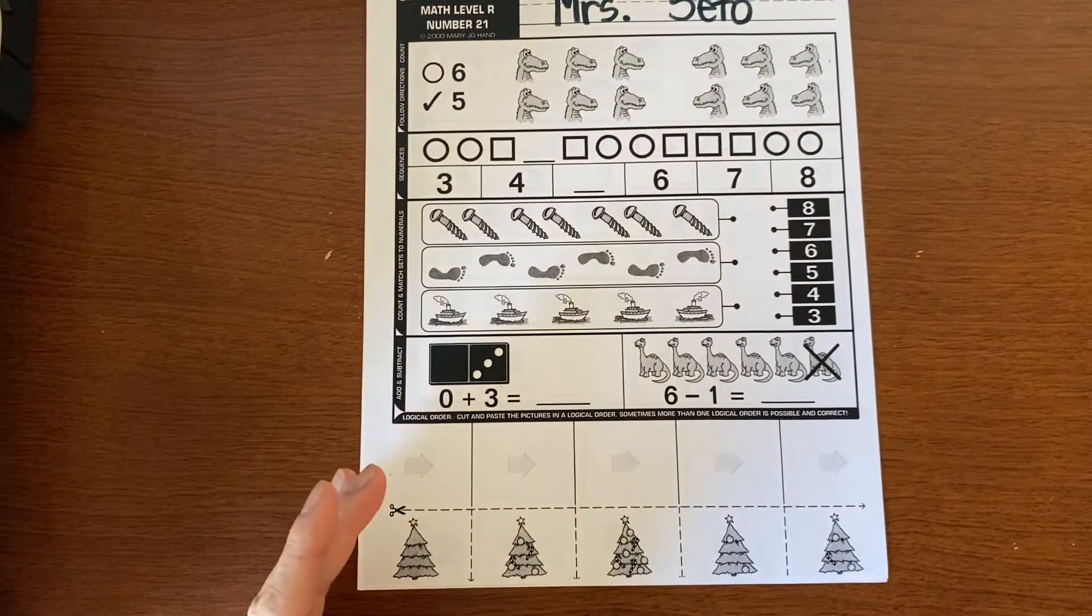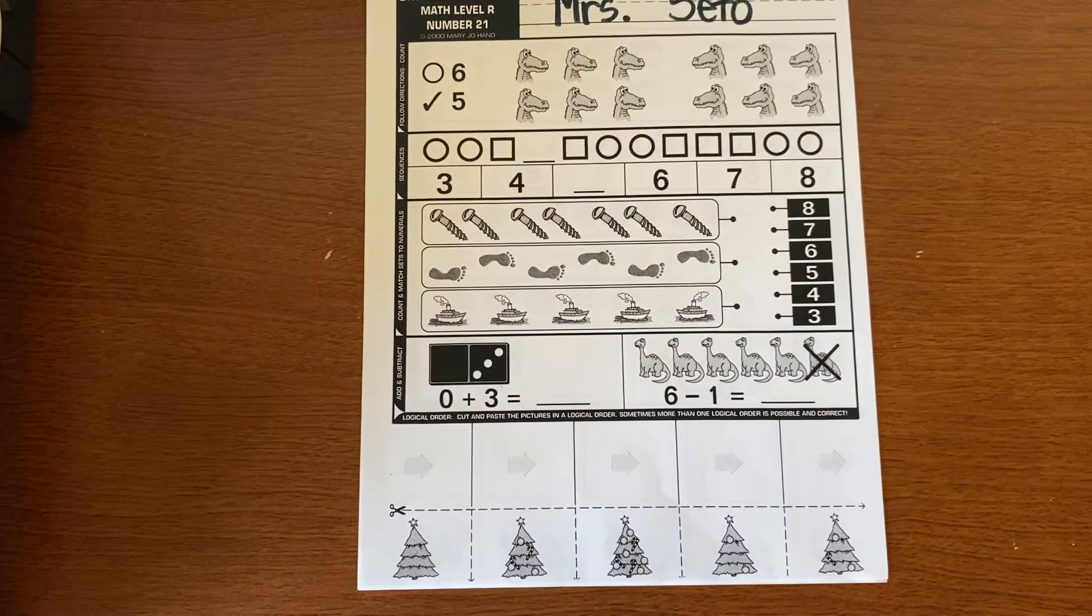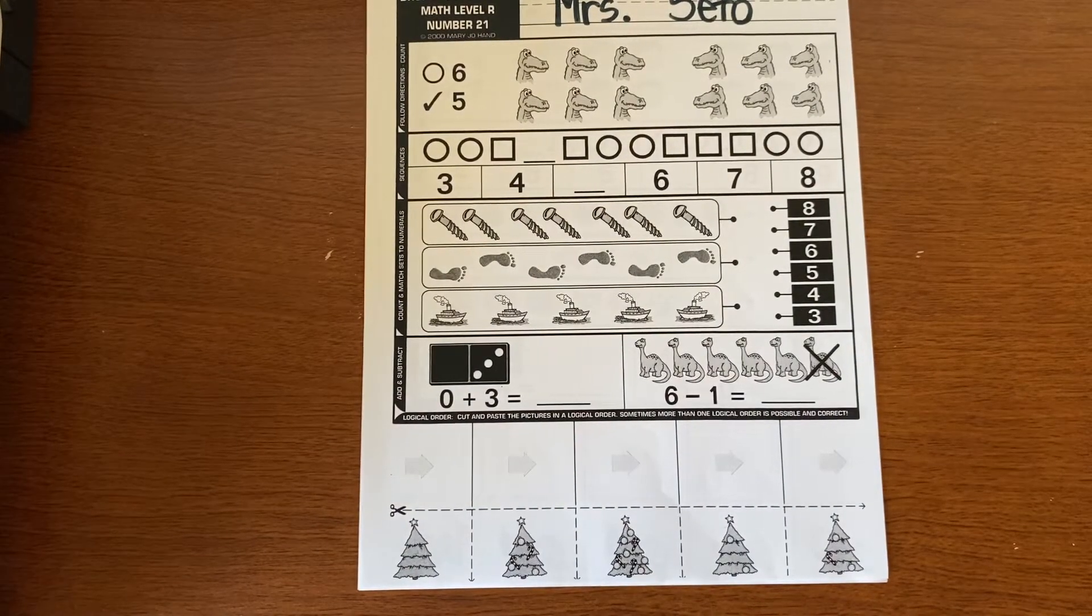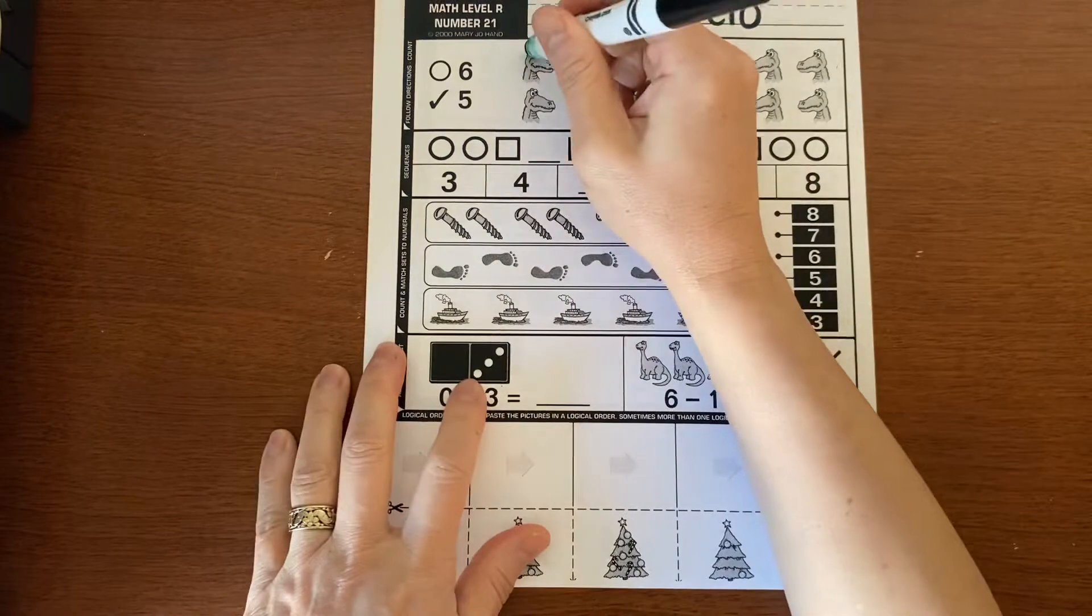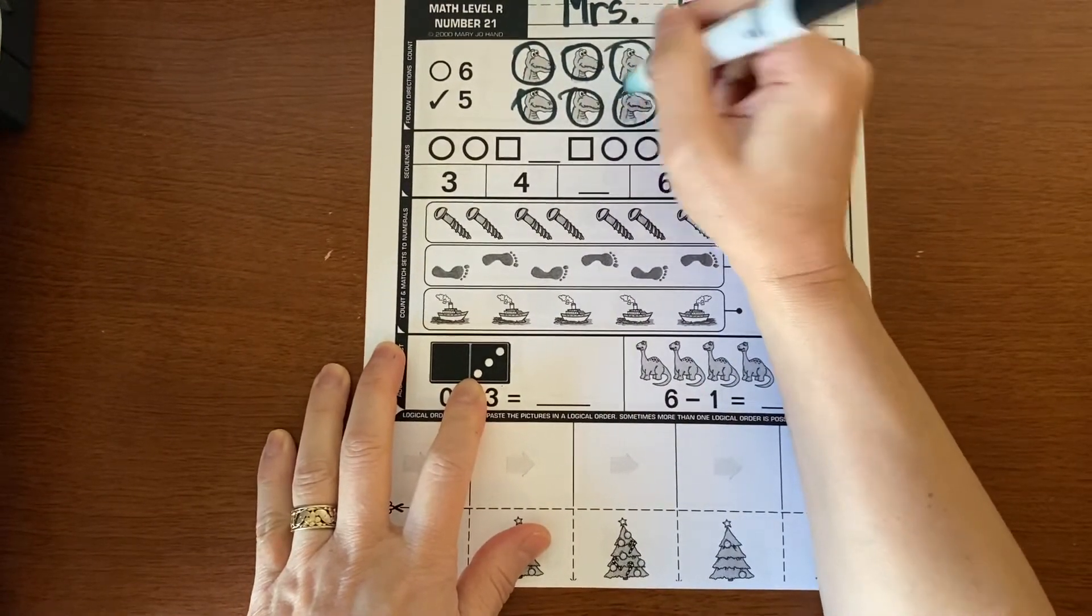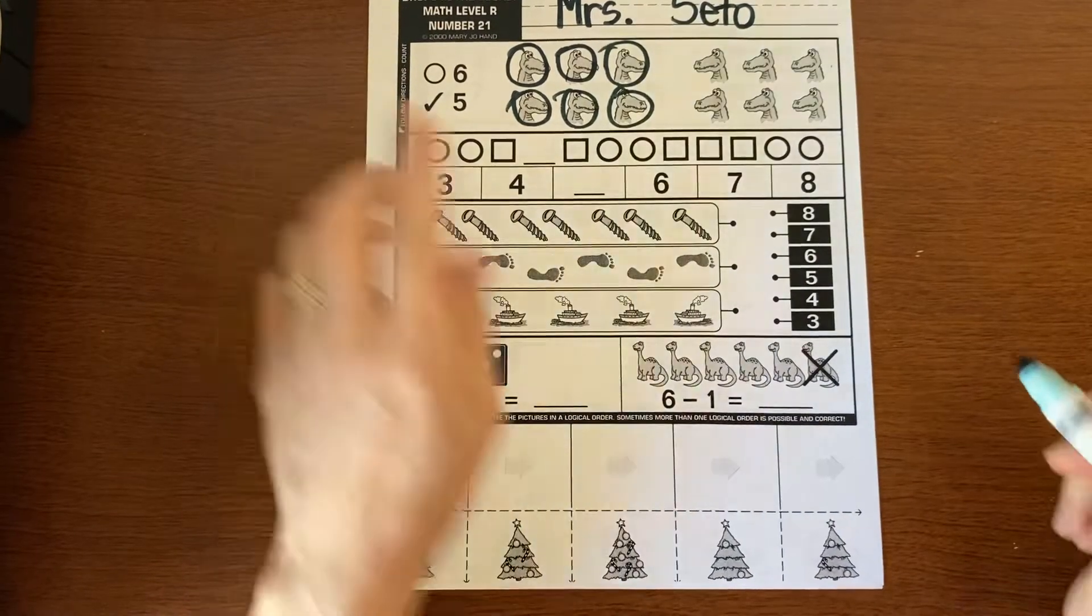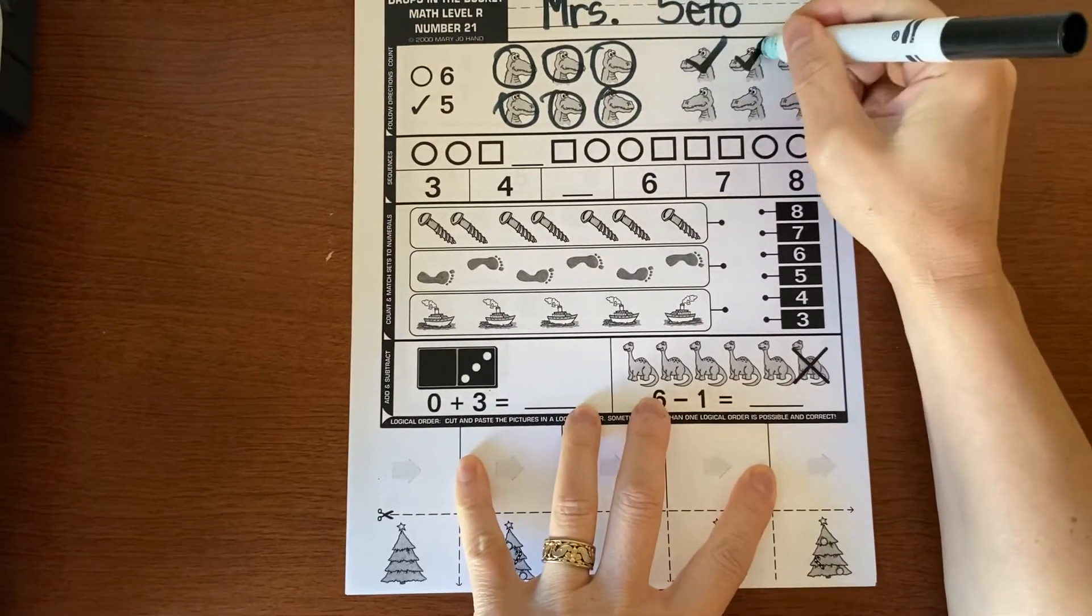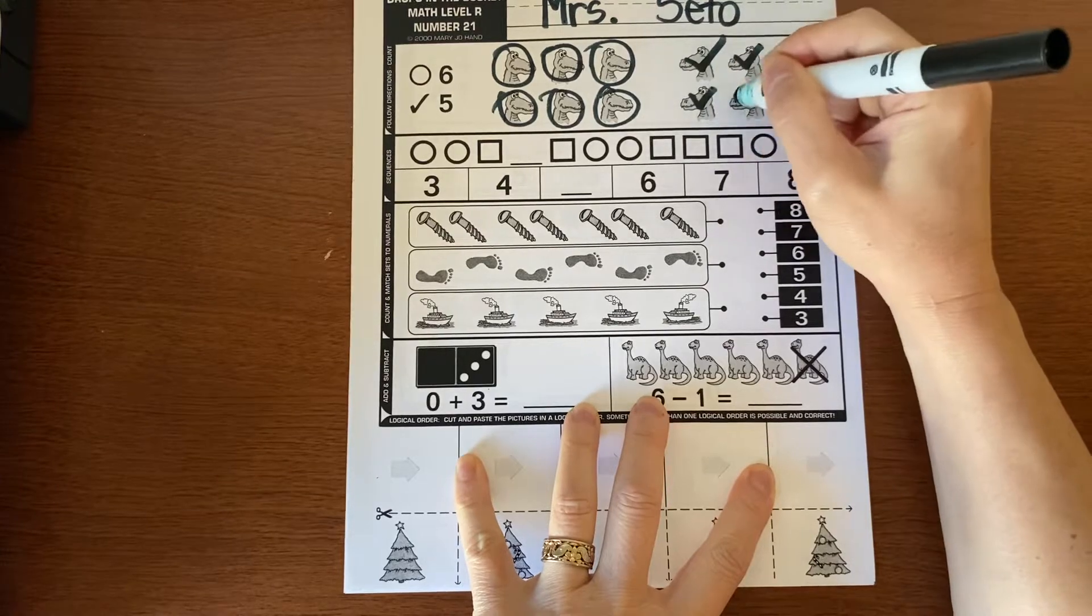Now it wants us to circle six. Circle six alligators. One, two, three, four, five, six. And then it wants us to check five of them. One, two, three, four, five.